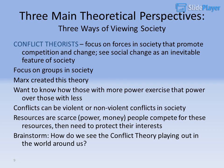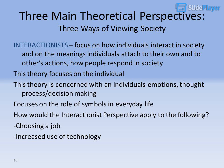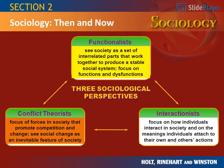Three Main Theoretical Perspectives: Three Ways of Viewing Society. Interactionists focus on how individuals interact in society and on the meanings individuals attach to their own and to others' actions — how people respond in society. This theory focuses on the individual, their emotions, thought process, and decision making. It also focuses on the role of symbols in everyday life. How would the interactionist's perspective apply to choosing a job or the increased use of technology?